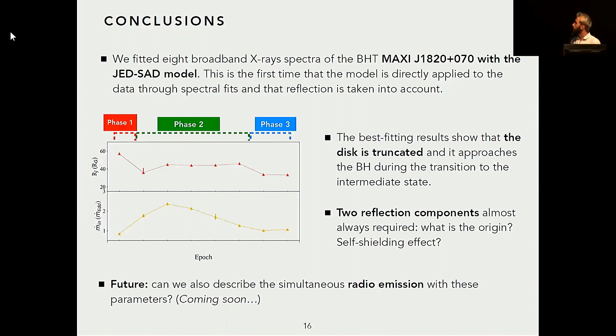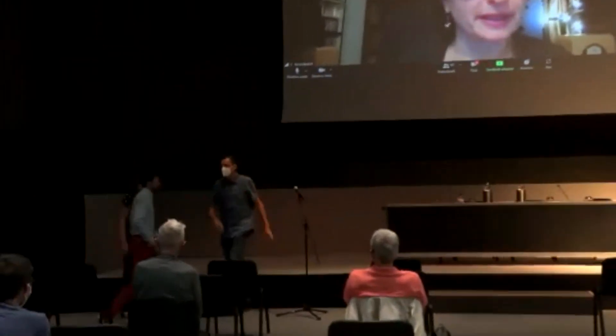Future work — as for GX 339-4 — will involve testing these results by attempting to reproduce the simultaneous radio emission. Thank you for your attention. [Question from Thomas Dauser:] Have you looked into how strong the reflection is in your spectra? Given your geometry assumptions, you should be able to estimate how much reflected flux you would expect — does that fit together with what you measure?